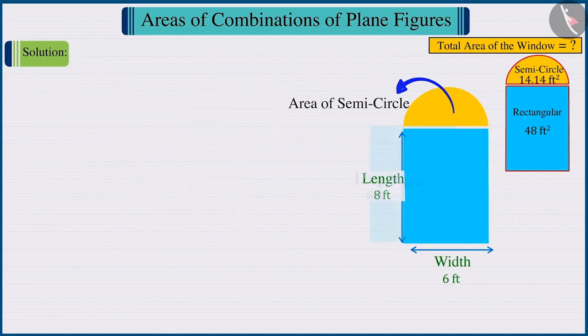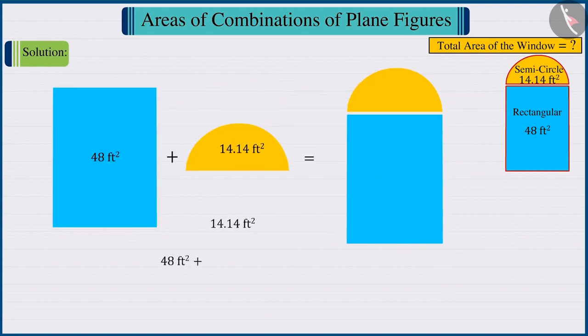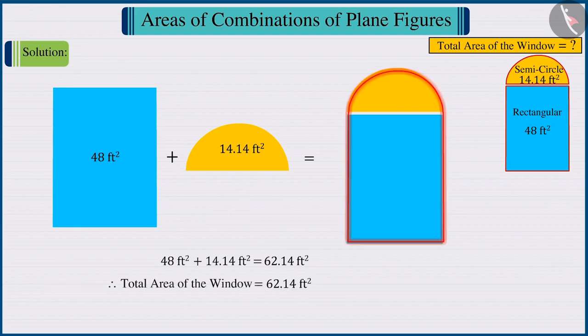If we add the areas of these two figures, we get the total area as 62.14 square feet. Therefore, the total area of the window is 62.14 square feet.